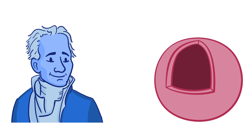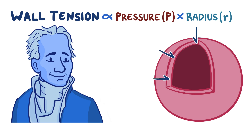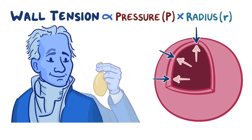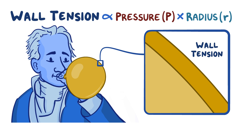According to the Law of Laplace, wall tension is proportional to pressure P times radius R. The wall tension is the force in the container's walls that resists the force trying to expand it. If we're blowing up a balloon, we can think of the wall tension as the force created by the elastic rubber wall that resists the outward force applied by the pressure inside the balloon. Breaking wall tension into components, we have a vertical vector of force counteracting the expansion and a horizontal vector of force stretching and tearing the balloon's wall.